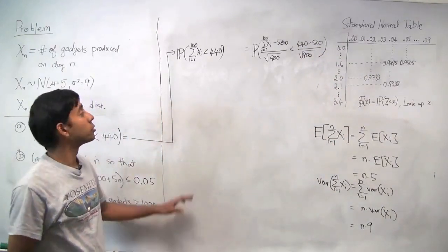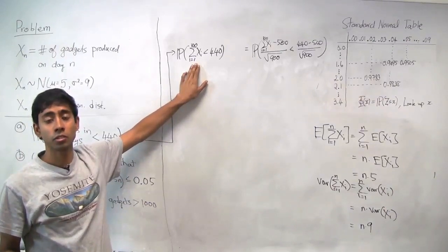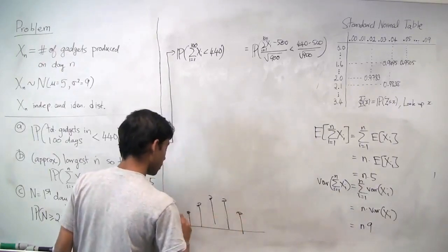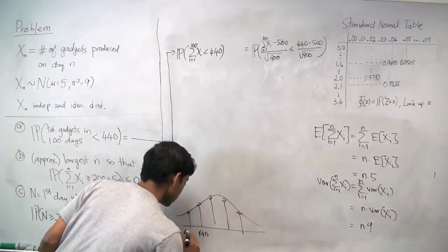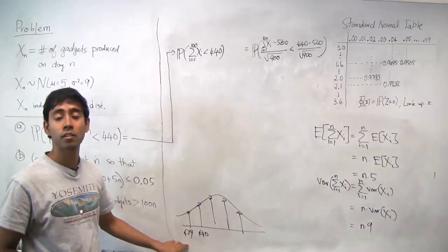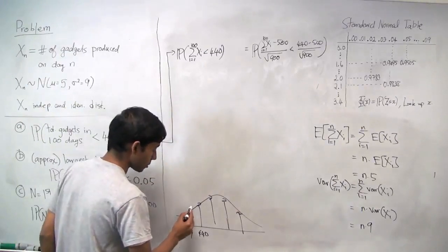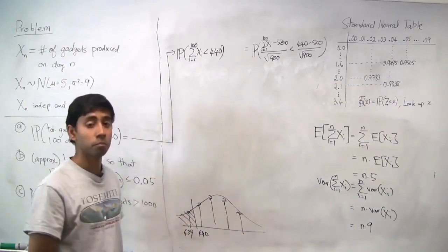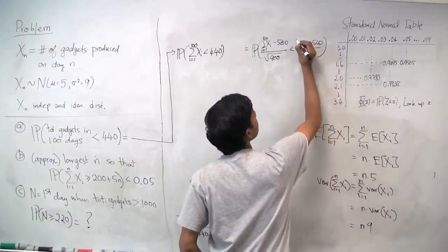Notice that the sum of xi's is a discrete random variable, so it may have a PMF like this. We're trying to approximate it with a normal density. This is not drawn to scale, but let's say this is 440 and this is 439. Basically we're asking: what's the probability of it being less than 440? That's the probability that it's 439 or 438 or 437. In the continuous case, a good approximation would be to take the midpoint at 439.5 and compute the area below that. When we do the normal approximation, it works out better if we use this half correction.